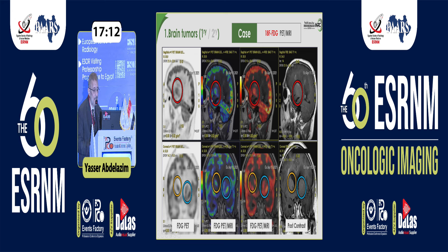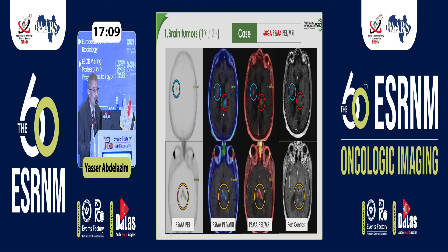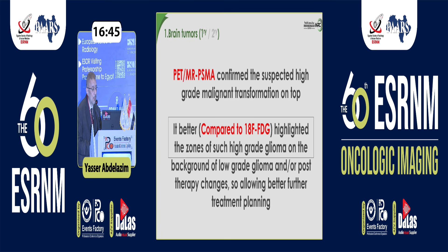We brought the patient back the next day and did gallium PSMA. With gallium PSMA, we now have more definitive solid evidence that there are several parts of high-grade malignant transformation on top of the low-grade. The background helps because you can clearly see what is taking up the tracer versus the background. The take-home message: when dealing with a question of high-grade, go for gallium PSMA — but better yet, if available, go for fluorine amino acid tracers like FET or F-DOPA.